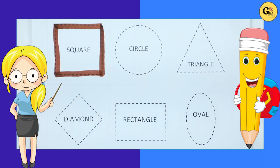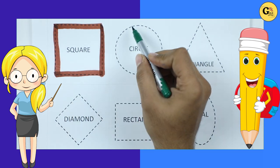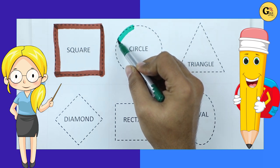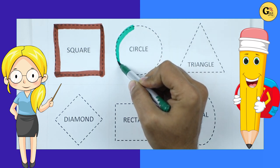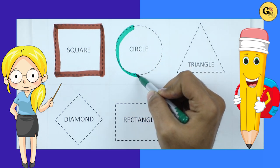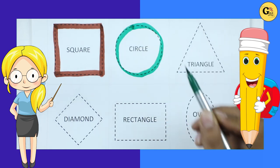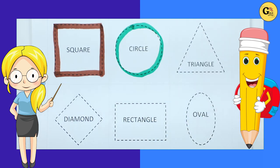It's circle. Circle with green color. Round. Circle.